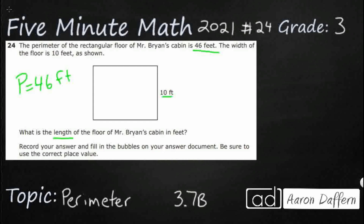We don't even have the length labeled, so we need to figure out what the length is. When we're talking about length, we usually hear length times width or length plus width — like length times width is going to be your area. So length is going to be across, and width is what they've already given us, that's up and down. So we're looking for this measurement right here.